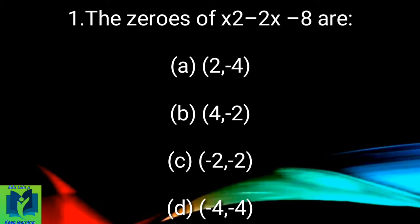The zeros of x² - 2x - 8 are: (a) 2 and -4, (b) 4 and -2, (c) -2 and -2, (d) -4 and -4.